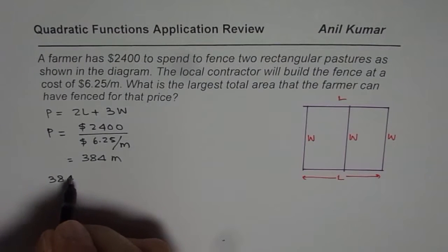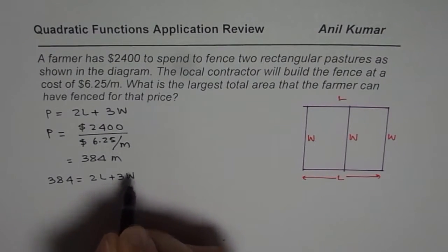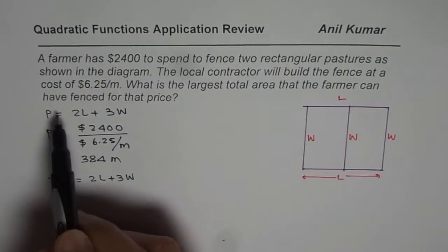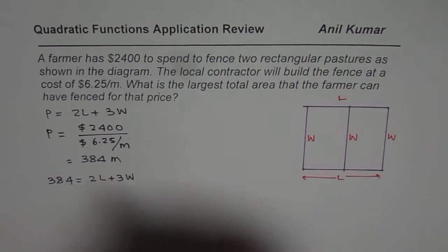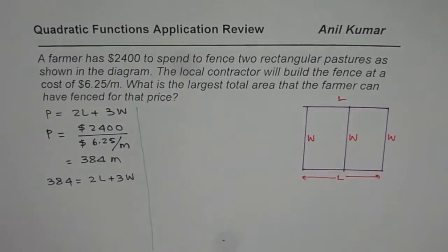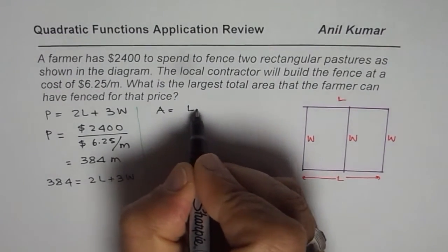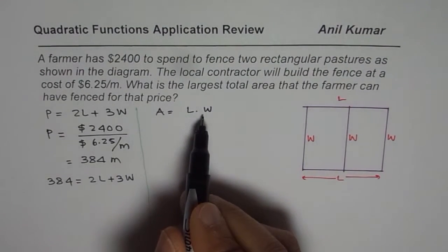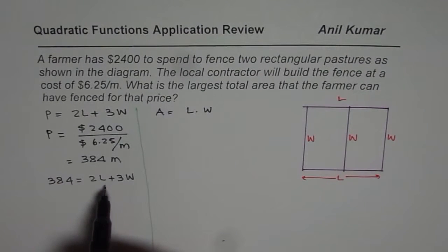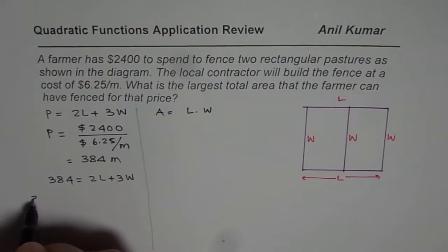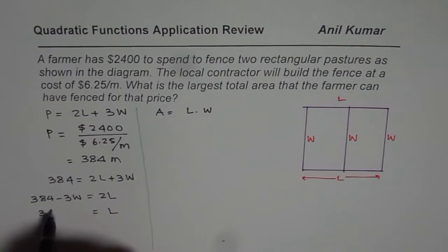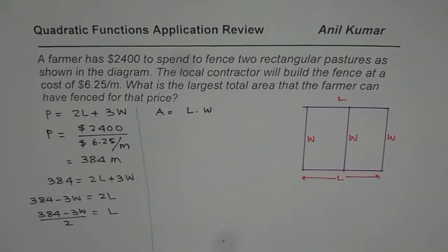So we have the equation: 384 = 2L + 3W. We need to find the largest total area, and the total area is length times width. But that gives us two variables, so we need to express it with one variable. Bringing W to one side: length L = (384 − 3W) / 2. Let us call this equation one.